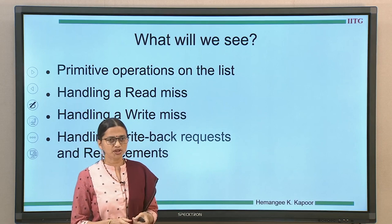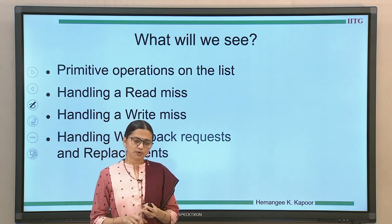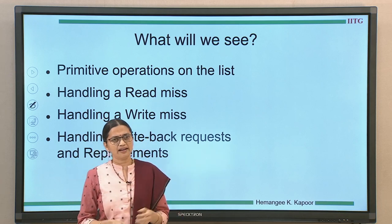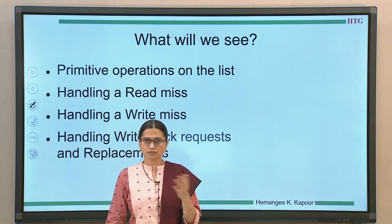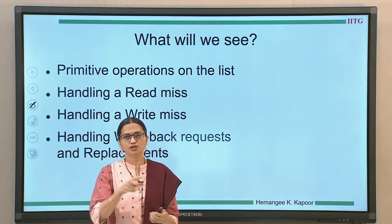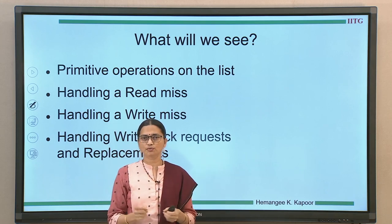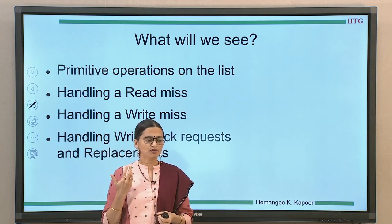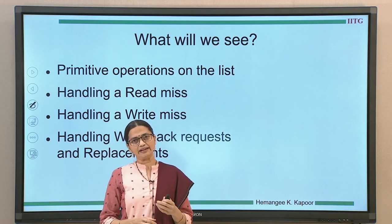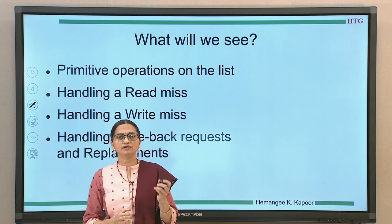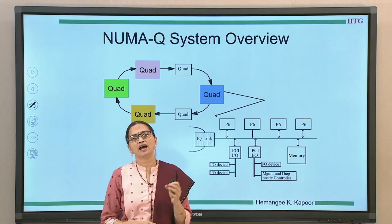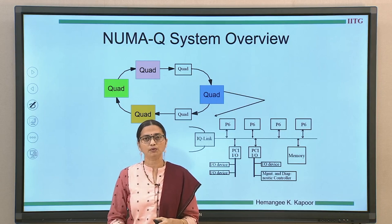We are going to look at the primitive operations on the list, because a cache-based directory protocol is nothing but a distributed linked list where every node in the list is the cache block, pointing forward and backward in both directions. The home node points to the head node of the list and the head points to the next and so on up to the tail. We will see the different types of operations on the linked list, then how to handle a read miss, a write miss, writebacks, and replacements. We'll begin with a quick recap of how the NUMA-Q system looks like and then start with the primitive operations.